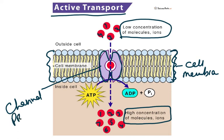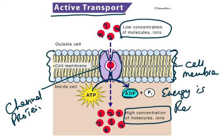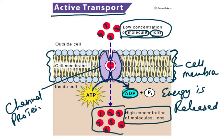The channel protein has an ATP binding site. ATP binds to it, becomes ADP, and energy is released. ATP is the universal energy currency used by all living organisms — plants, animals, bacteria, fungi. The energy causes the channel protein to change shape, pick up a molecule or ion from low concentration, and transport it to the other side where concentration is already high — that is, against the concentration gradient. This is why it requires energy released by respiration.